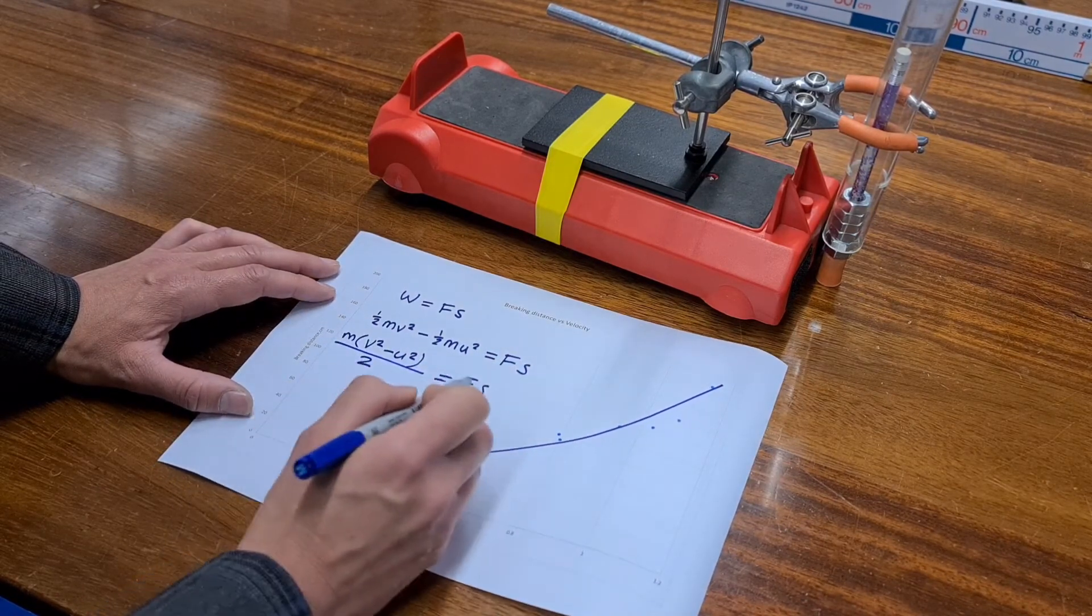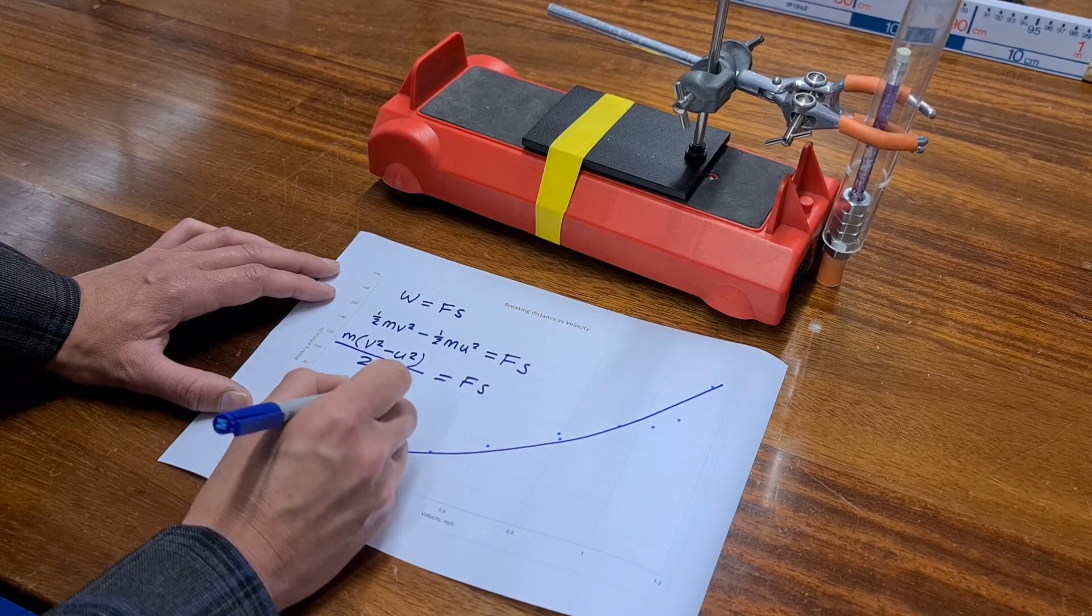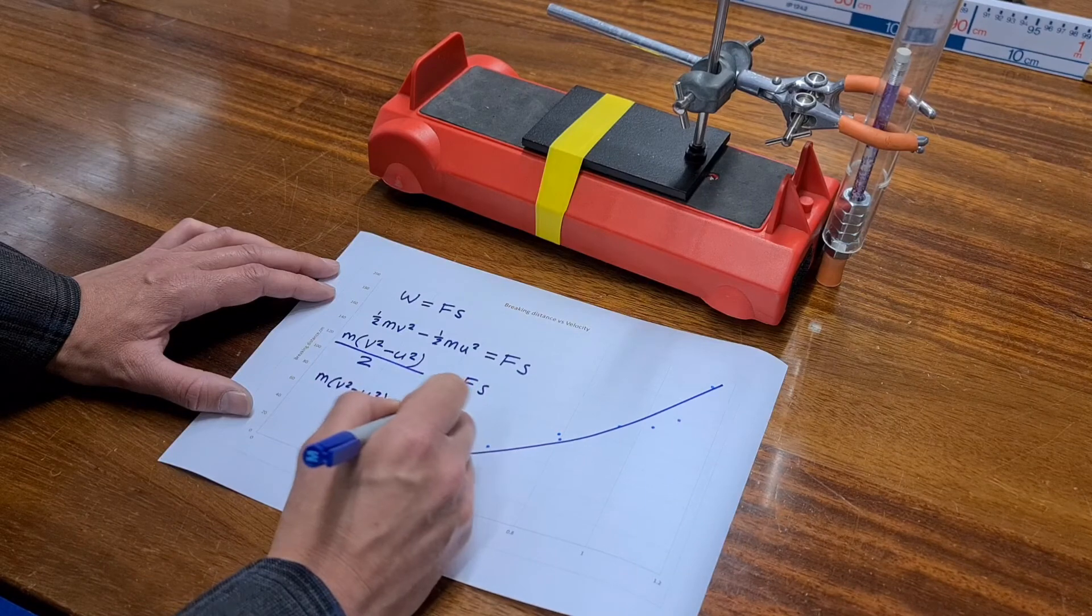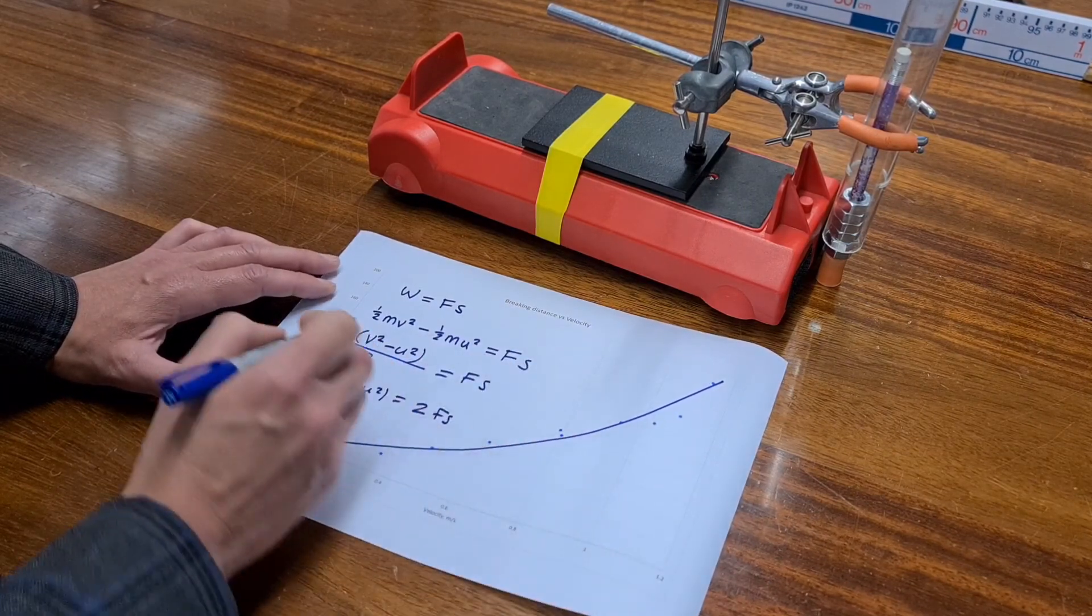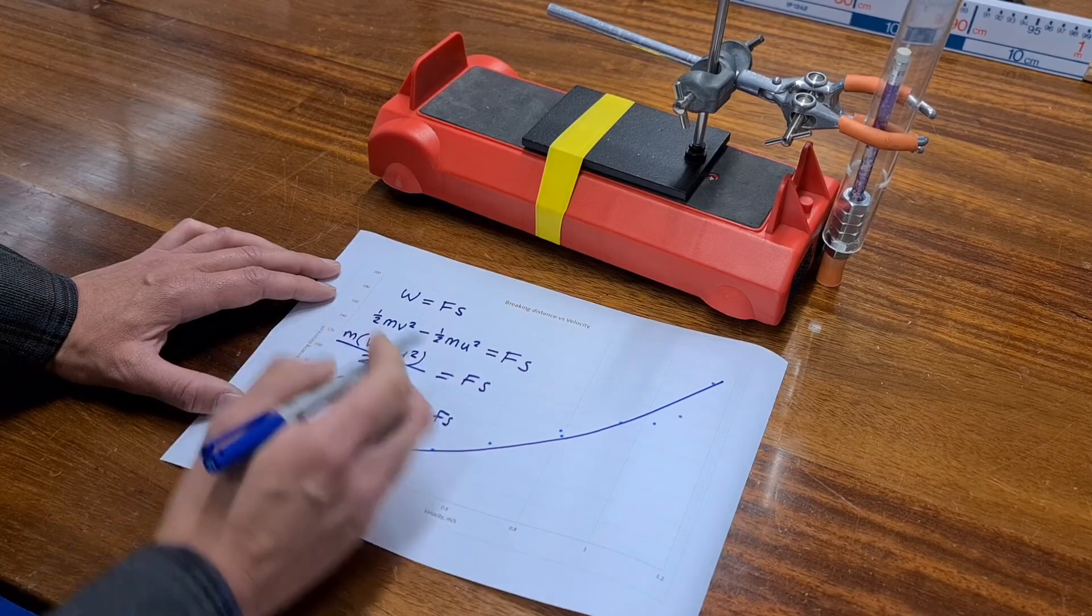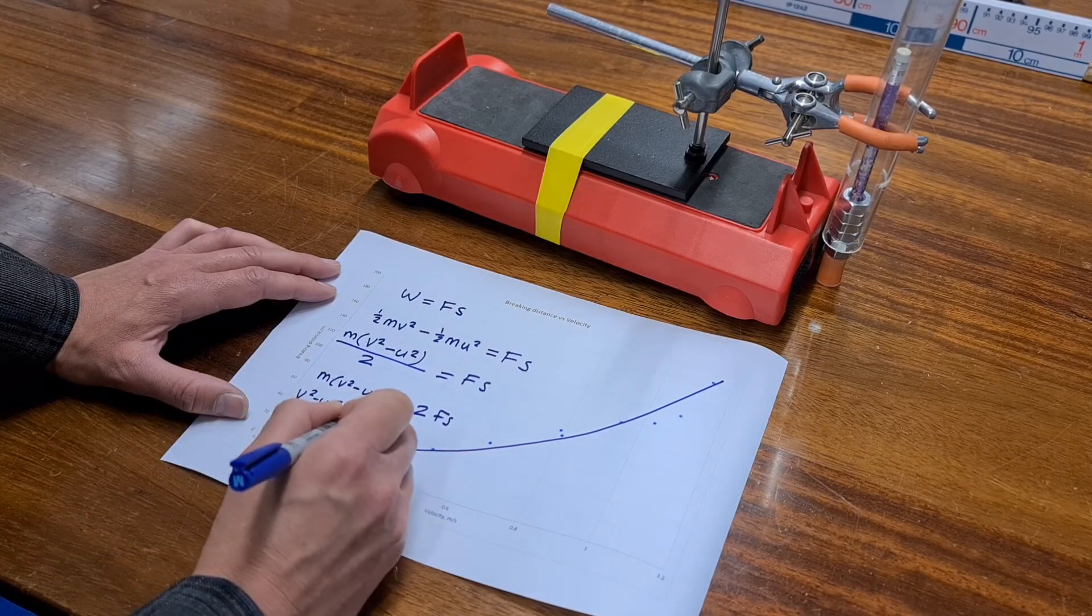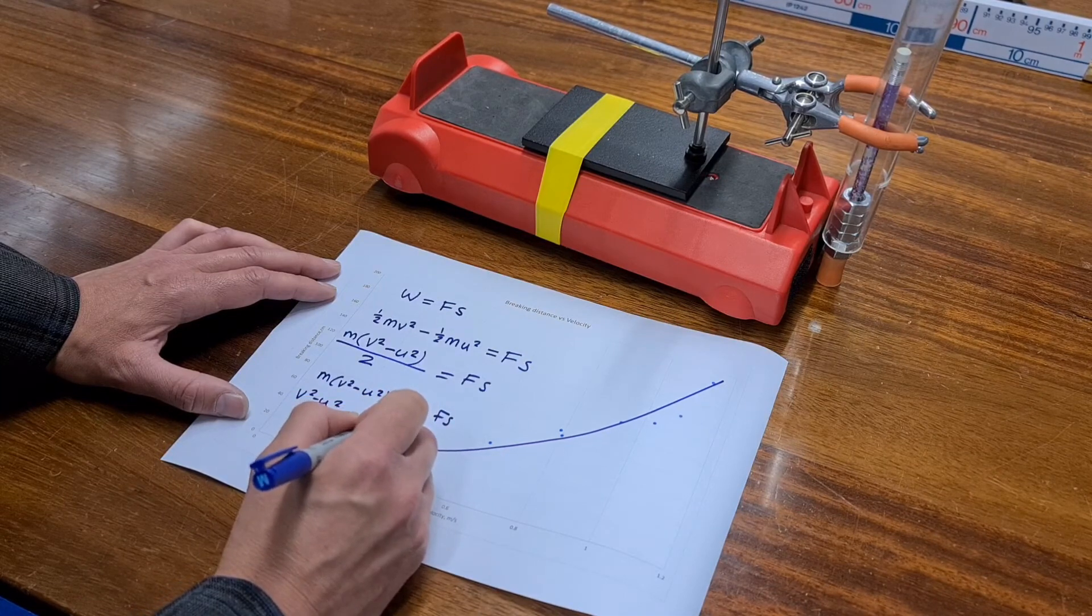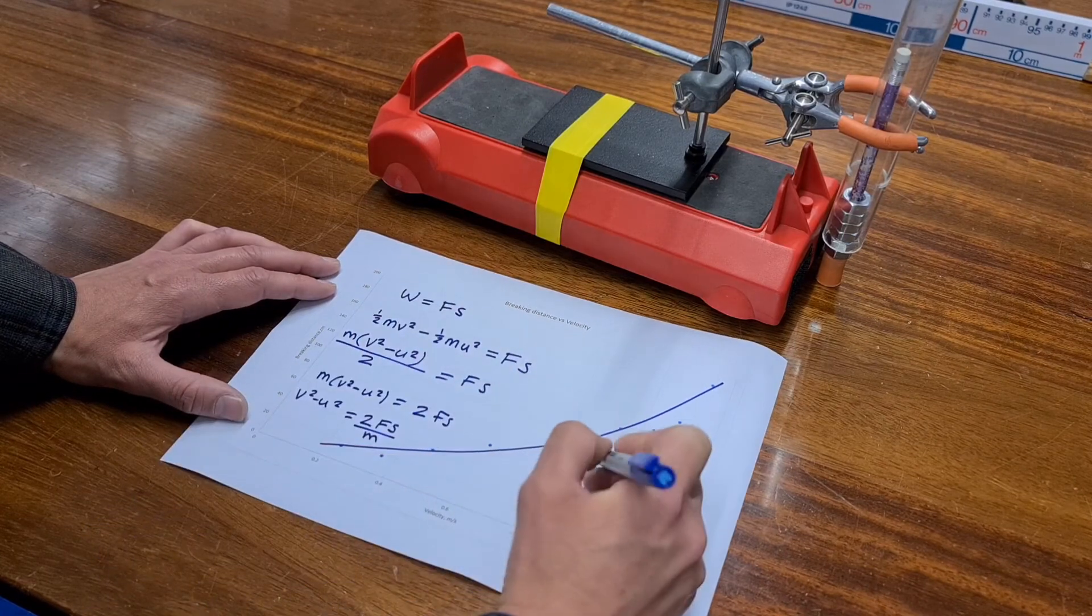So times everything by 2, gets rid of the 2 on this side, is equal to 2fs. And now multiply everything, sorry, divide everything by m to get rid of this m. And then we end up with v squared minus u squared equals 2fs divided by m.